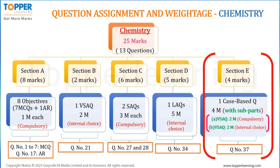In Section E, 4 marks are allotted to chemistry. One case-based compulsory chemistry question of 4 marks will be asked. These 4 marks will be distributed between 2 subparts — sub-question A and sub-question B — of 2 marks each. Sub-question A will be compulsory while sub-question B will have internal choice, meaning you need to answer any one of 2 questions. Question number 37 will be that case-based question for chemistry.